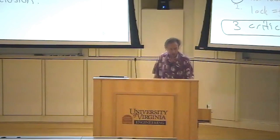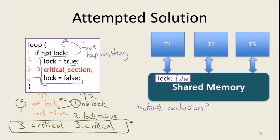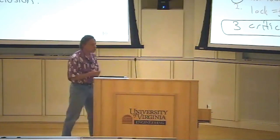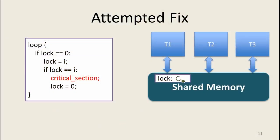One way of looking at the problem is that both threads are setting lock to the same value true, so they can't tell which one actually set it. So instead of making lock just a Boolean, let's make it a number. We'll use zero to mean no thread has the lock, and the thread's number to mean thread i has it. You check if the lock is zero, then set it to your thread identity, then verify it still has your identity before entering the critical section. When done, you set it back to zero so another thread can get it.